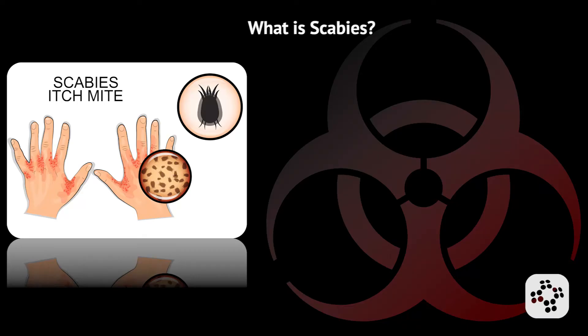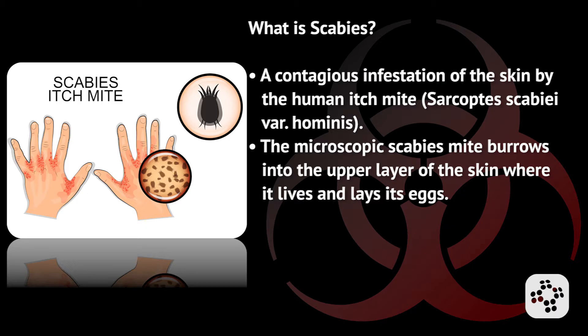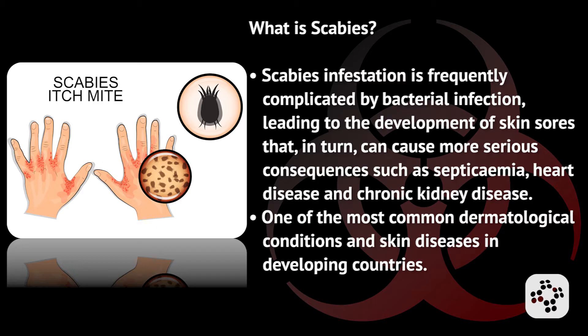So what is scabies? Scabies is a contagious infestation of the skin by the human itch mite, Sarcoptes scabiei var. hominis. The microscopic scabies mite burrows into the upper layer of the skin where it lives and lays its eggs. Scabies infestation is frequently complicated by bacterial infection leading to the development of skin sores that in turn can cause more serious consequences such as septicemia, heart disease, and chronic kidney disease. It is one of the most common dermatological conditions, accounting for a substantial proportion of skin disease in developing countries.